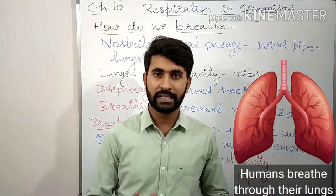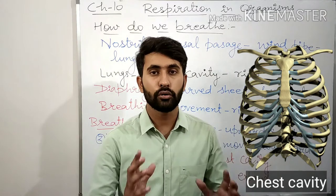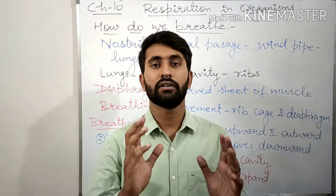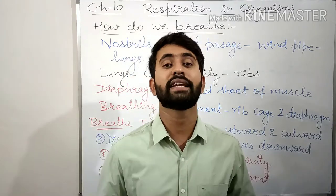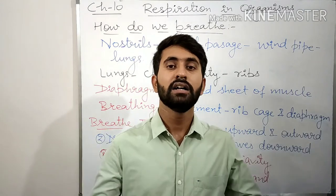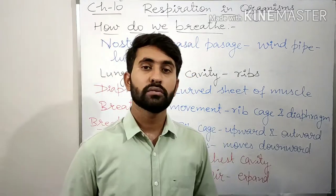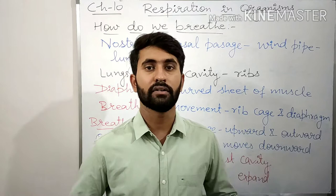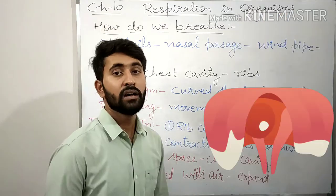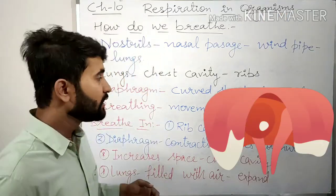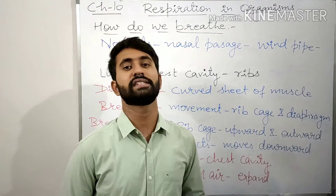Our lungs are present inside the chest cavity. The chest cavity is a hollow space which contains our heart and lungs. It is surrounded by the ribs, which are the bones that cover the chest cavity and protect our lungs and heart. A curved sheet of muscle at the bottom of the chest cavity is known as the diaphragm, which forms the floor of the chest cavity.